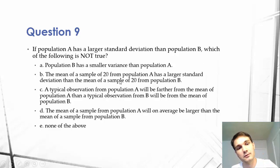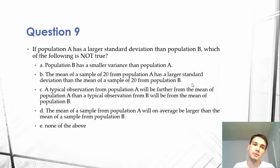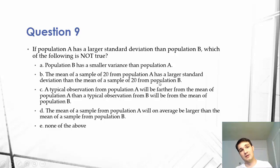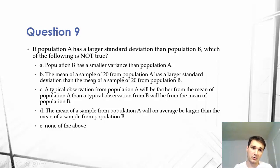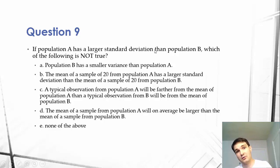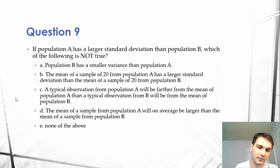The mean of a sample of 20 from population A has a larger standard deviation than the mean of a sample of 20 from population B — this is also a true statement. It doesn't matter how large the sample gets; if the standard deviation is larger, it's going to be proportional to the population. If A has a larger standard deviation than B, it doesn't matter how many there are — it's always going to have a larger standard deviation.